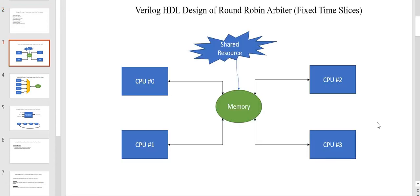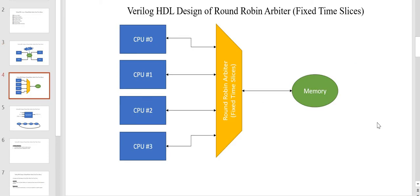Here you can see that there are 4 CPUs which are trying to access a common shared resource which is memory. The memory can be accessed only by a single CPU at a time. In order to enable this mechanism of accessing the memory by a single CPU at a time, we need some additional hardware — that hardware is nothing but an arbiter. We are going to use a round robin arbiter where the 4 CPUs will get access to the memory one by one in a round robin fashion.